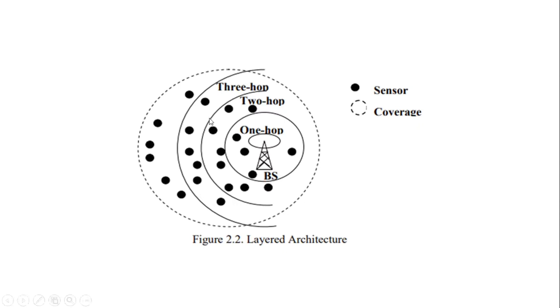Basically, the sensor nodes are divided into layer-wise and this is a coverage area. So if the sensor node of two-hop layer wants to communicate with the base station, then they first transmit information to the sensor node of one-hop layer and then they communicate with the base station.